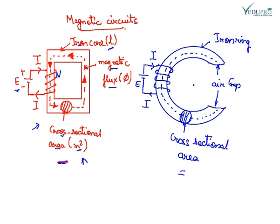This circuit here consists of an iron ring of cross-sectional area m square and the mean length of the iron ring is li meters.